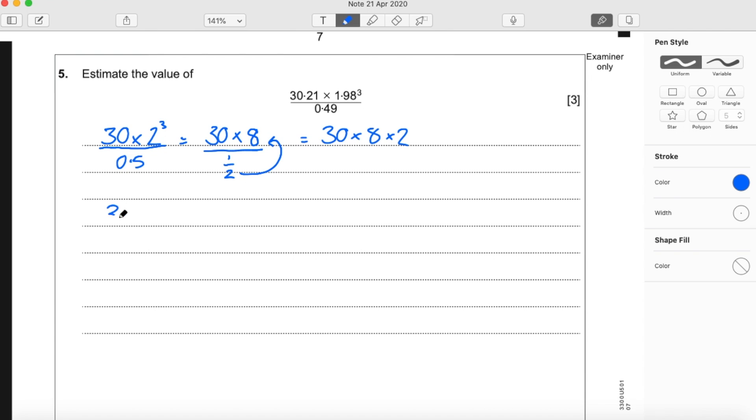Alternatively, you can think of this as 30 times 8 divided by 1 half, which is the same as 30 times 8 times 2. Because when we have a question like this, we can change this sign to multiply if we flip that upside down. So 30 times 8 times 2. I'm going to make that a bit easier. 30 times 16.